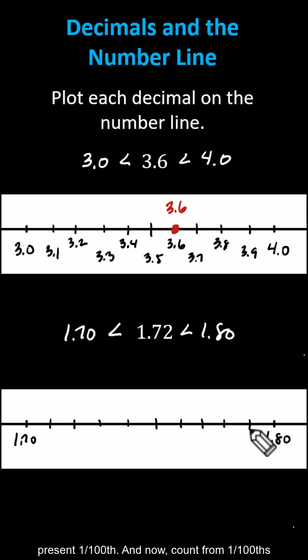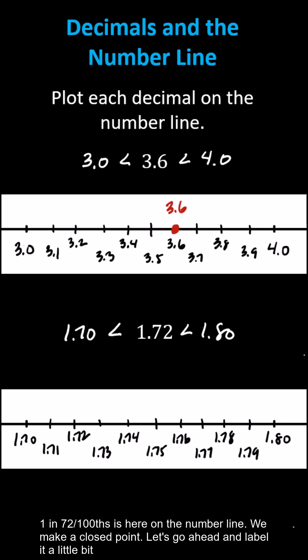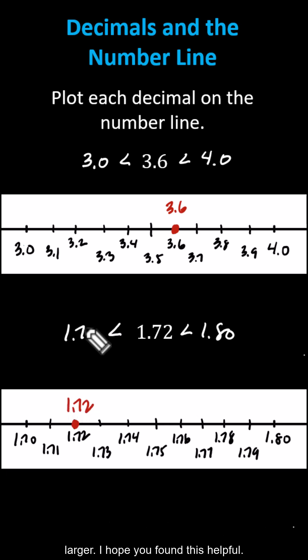And now we'll count from 1 and 70 hundredths to 1 and 80 hundredths by hundredths. 1 and 72 hundredths is here on the number line. We make a closed point and label it. I hope you found this helpful.